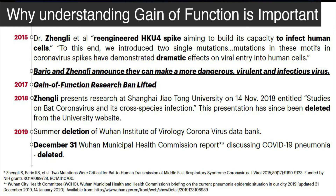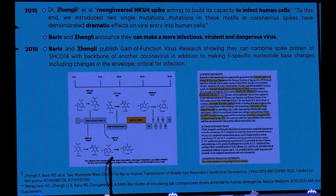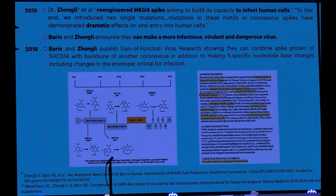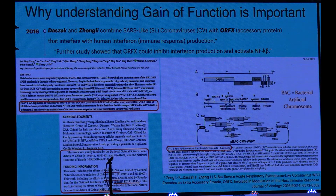Further engineering of HKU4 occurred in 2015. In 2015 they actually said they could make a more infectious, virulent virus — and journalists caught it. The 2016 paper everyone is excited about merged the spike protein of one virus to the backbone of another. But if you go to the supplements, you find five additional specific nucleotide inserts placed by these researchers. One is in the envelope, which is critical for infection.